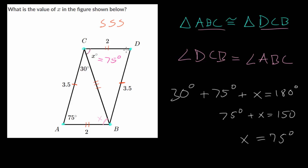We can also figure out the other angles. The angle at D is also 75 degrees, since angle D and angle A are equal to each other. And the third angle is the 30 degree angle. The order in which you write the congruence statement tells you which angles and side lengths correspond to each other.